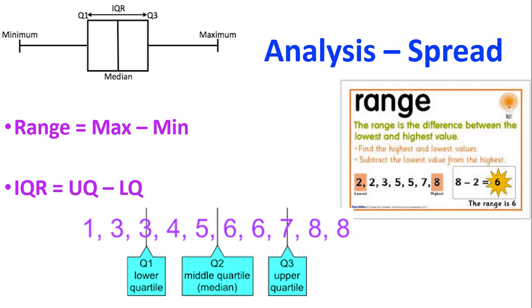And that gives you, the interquartile range is looking at how big is the spread in the middle of the data. So the range is looking at the spread overall, and the interquartile range is looking at the spread in the middle.